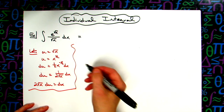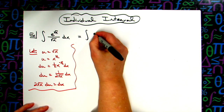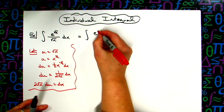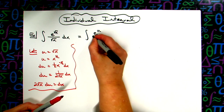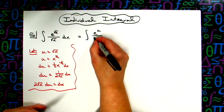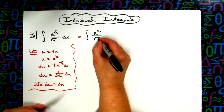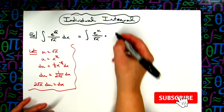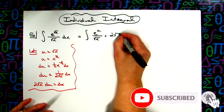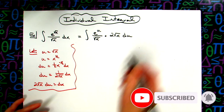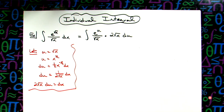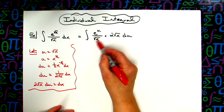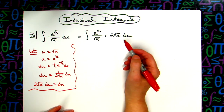Then I'm going to come back up here and start substituting. I'm going to have an e, and I'm going to substitute the square root of x there with my u. I'll leave the square root of x in the bottom, and then I'm going to replace the dx with what it equals, which is 2 square root of x du. You can see why I left that square root of x there in the bottom — I wanted the square root of x's to cancel out.